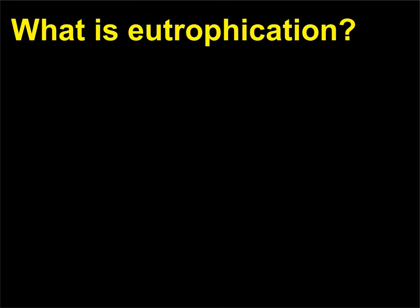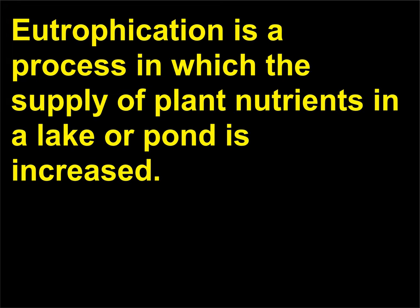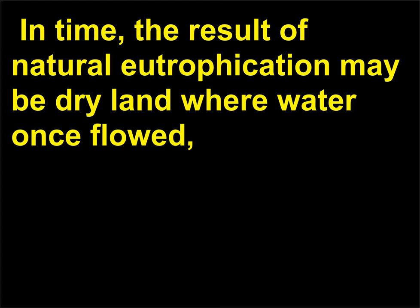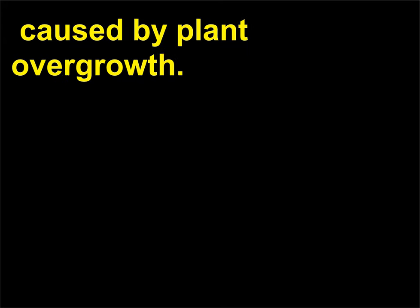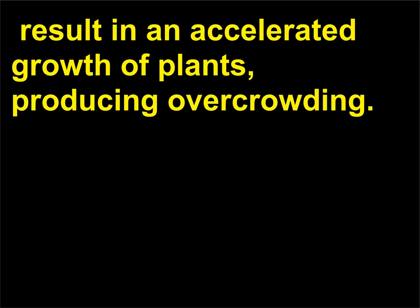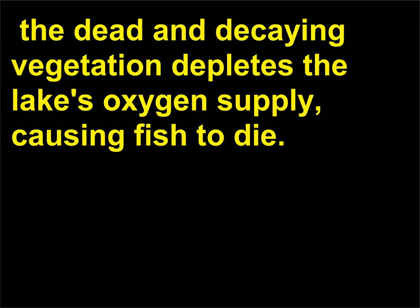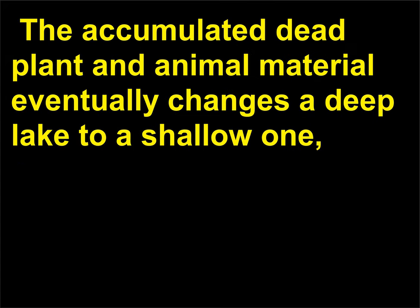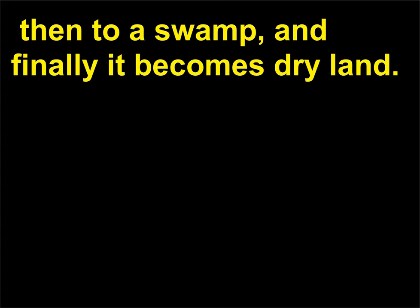What is eutrophication? Eutrophication is a process in which the supply of plant nutrients in a lake or pond is increased. In time, the result of natural eutrophication may be dry land where water once flowed, caused by plant overgrowth. Natural fertilizers washed from the soil result in an accelerated growth of plants, producing overcrowding. As the plants die off, the dead and decaying vegetation depletes the lake's oxygen supply, causing fish to die. The accumulated dead plant and animal material eventually changes a deep lake to a shallow one, then to a swamp, and finally it becomes dry land.